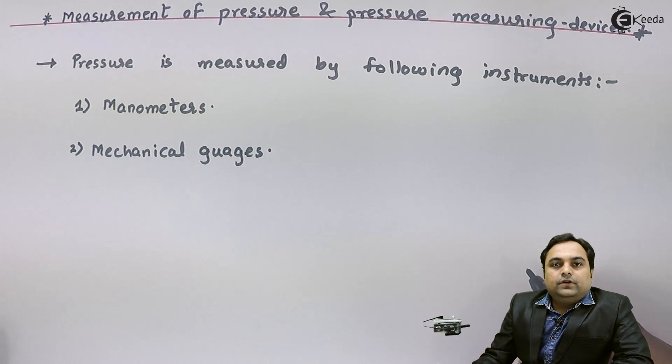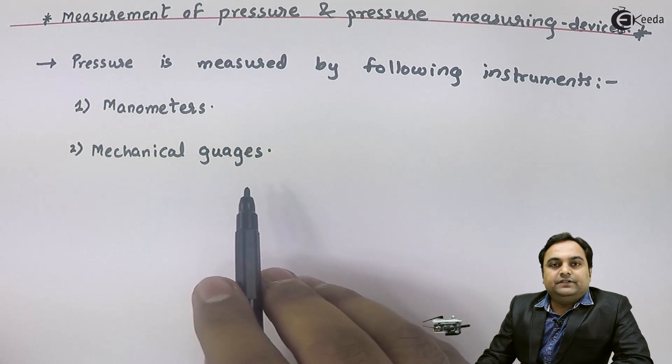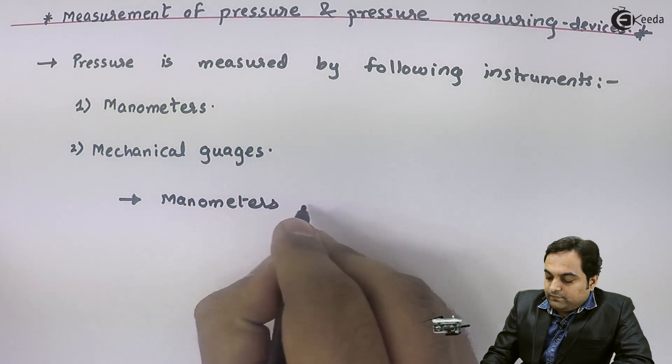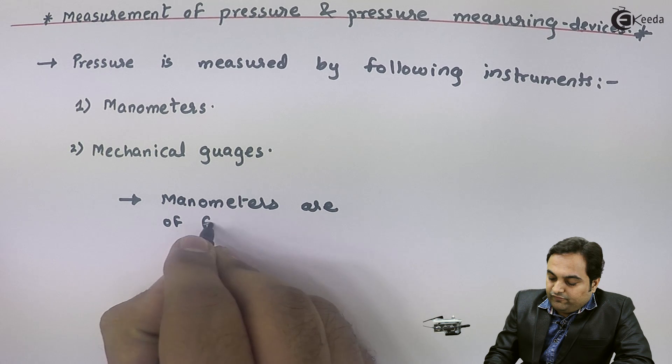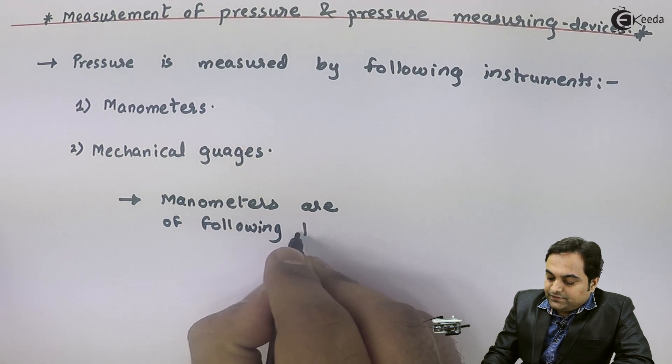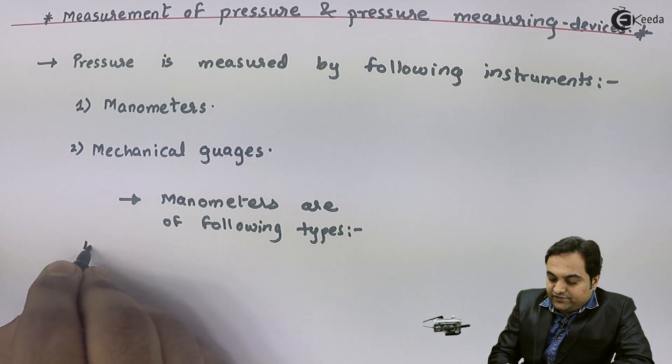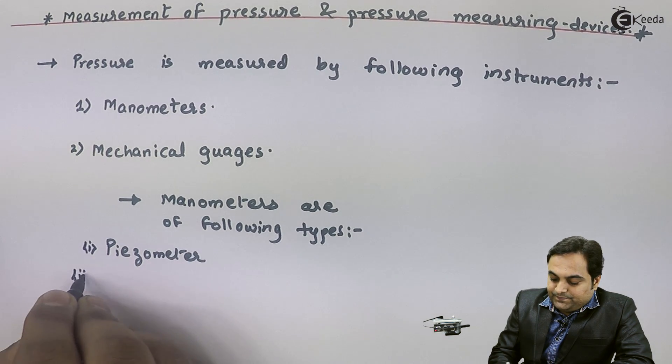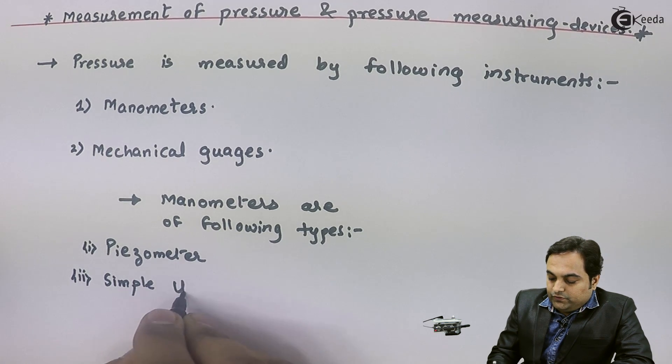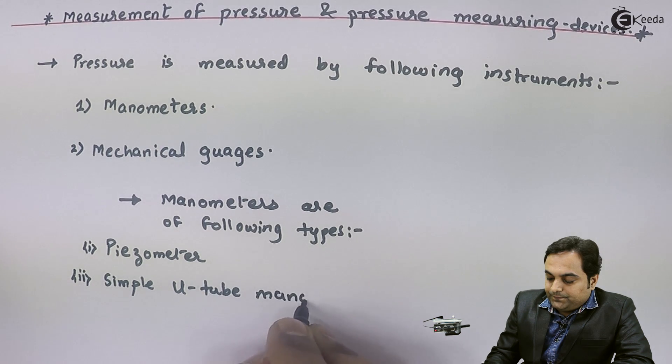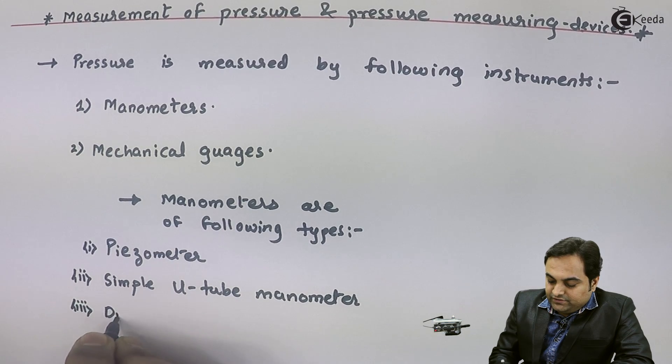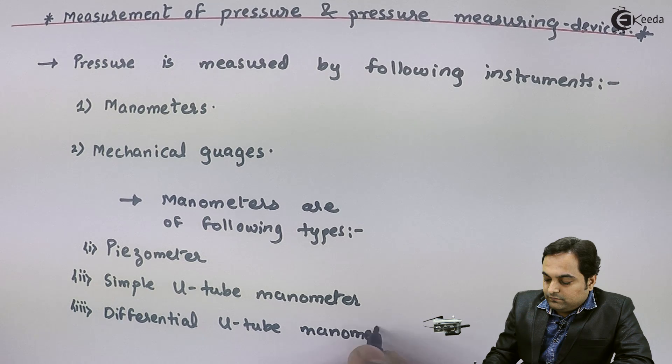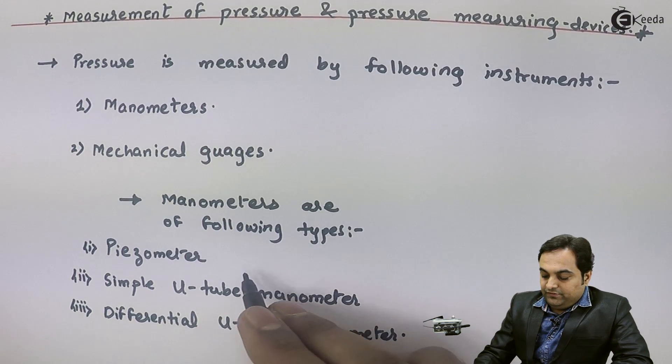The two commonly used pressure measuring devices with the help of that we can measure pressure of any kind of fluid. Manometers are of following types: we have piezometer as the simplest form of manometer, then there is simple U-tube manometer, next there is differential U-tube manometer. So these are the common varieties of manometers.